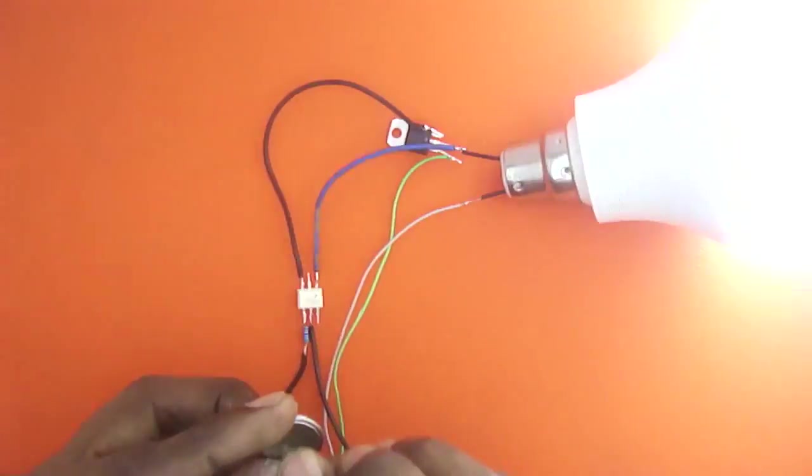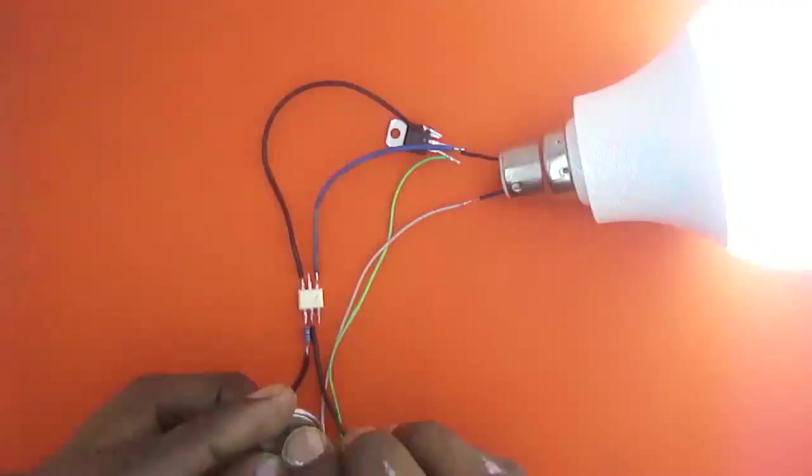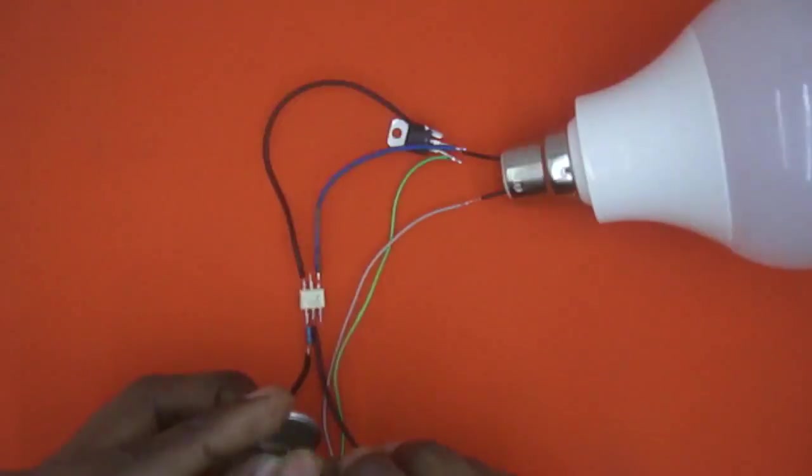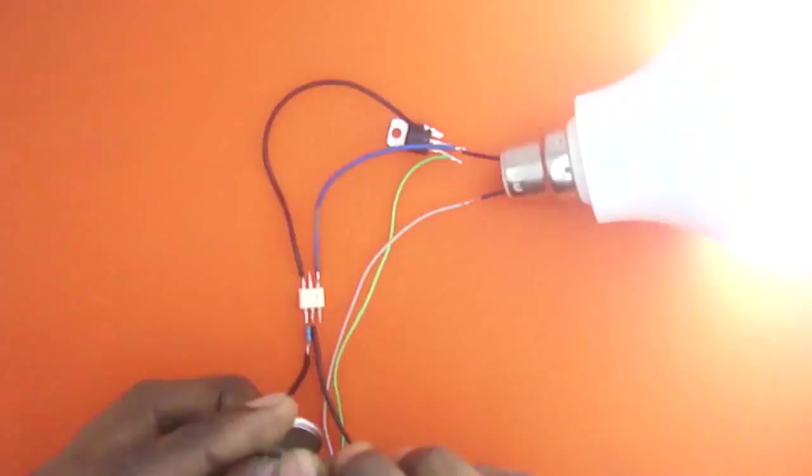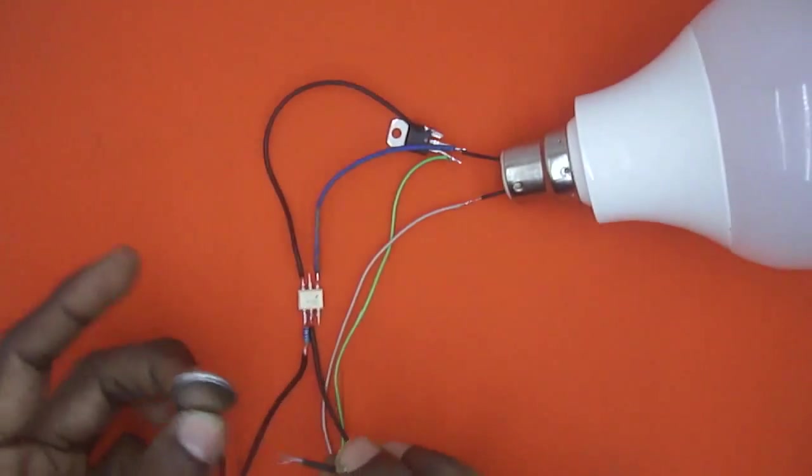So whenever I am giving power supply, actually the LED is glowing and at the same time the bulb on AC side is also glowing. So now it is very simple.